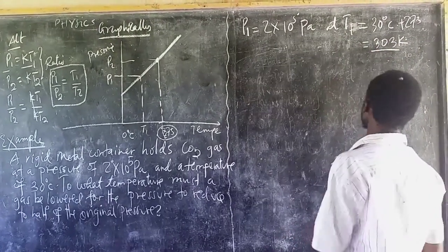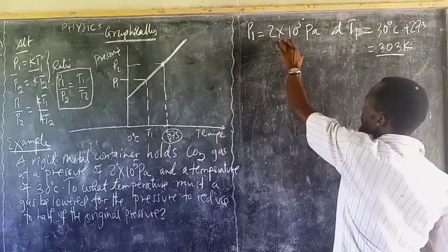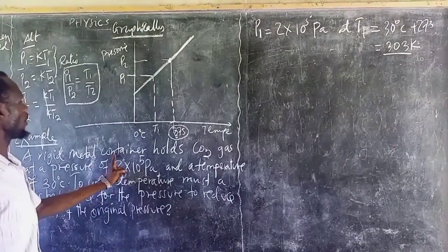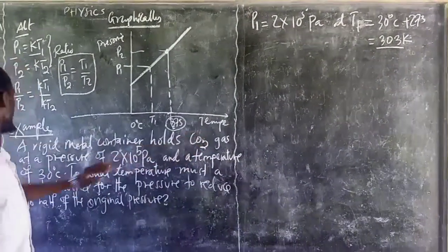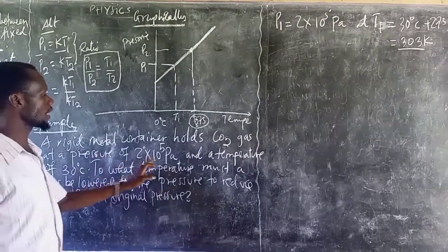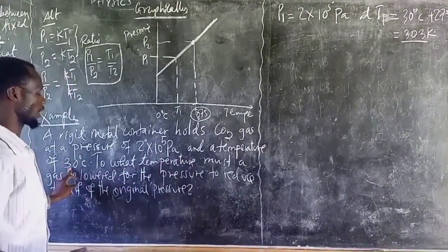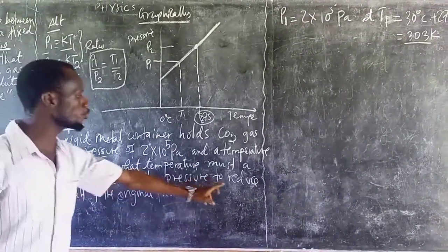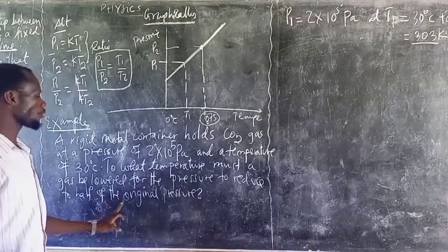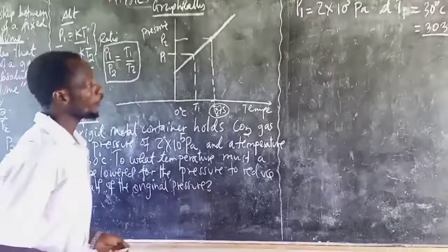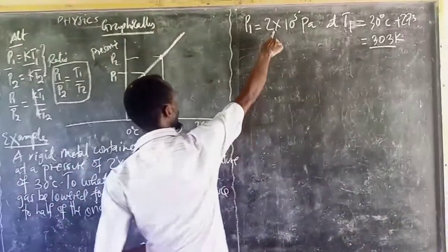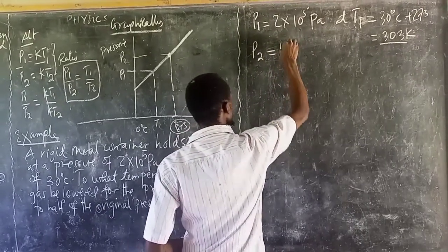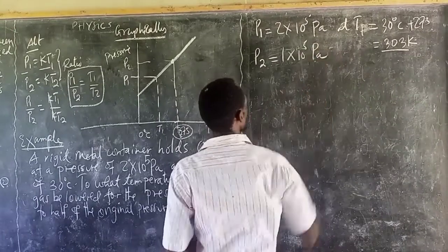A rigid metal container holds hot carbon dioxide gas at a pressure of 2 times 10 to the power 5 Pascals at that temperature. To what temperature must it be lowered for the pressure to reduce to half of the original pressure? Half of the original pressure is 2 times 10 to the power 5 divided by 2, which equals 1 times 10 to the power 5 Pascals. This is the new pressure P2.